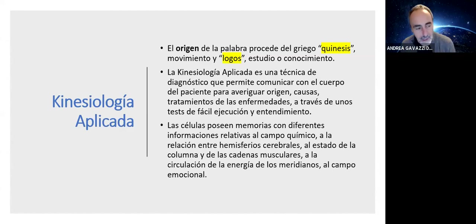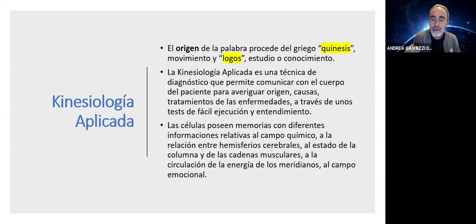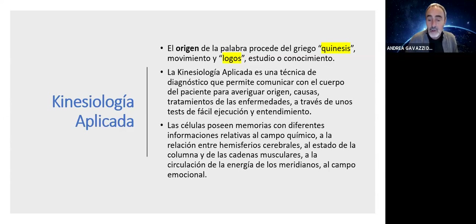Yo estoy convencido de que la kinesiología es cierta y funciona porque no tengo forma de saber si tengo un paciente acostado en la camilla que no he tocado, que no he visto, que no le he hecho ninguna pregunta, y pregunto con el Arm Reflex qué vértebra tiene subluxada. Luego voy a tocar esa vértebra y veo que efectivamente está subluxada y no hay otra. Las vértebras son 24, y el test me dijo que la C2, la cuarta dorsal y la L3 estaban subluxadas. Luego lo compruebo y así es.